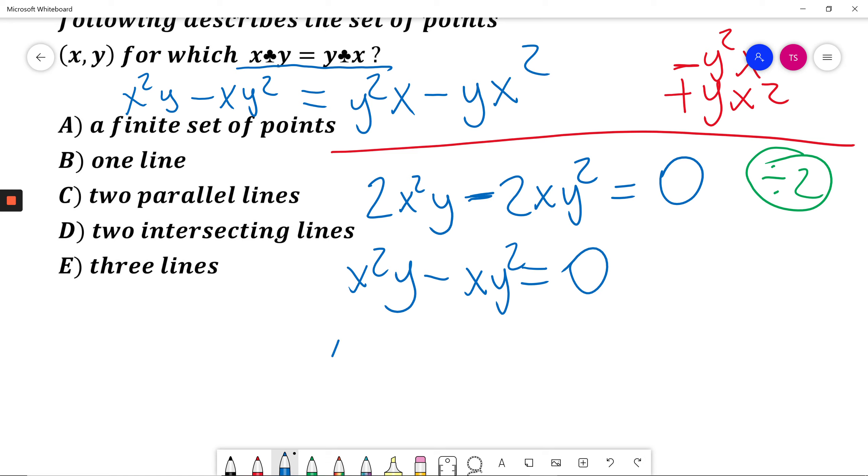Now I can factor out xy to get xy(x - y) = 0.